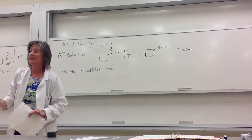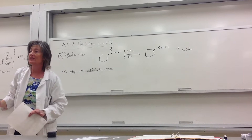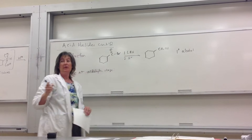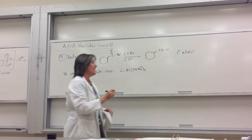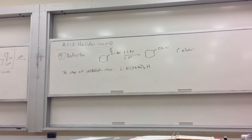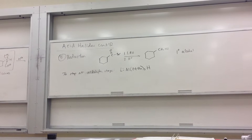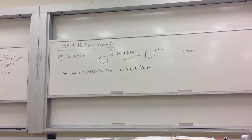LAH is too reactive to stop at the aldehyde. You use a watered-down version: lithium aluminum tri-tert-butoxy hydride. It's basically an LAH where most of the hydrides have been removed and you just have one. So it goes to the aldehyde and stops there. That's more efficient than using PCC to go back from where you just came.